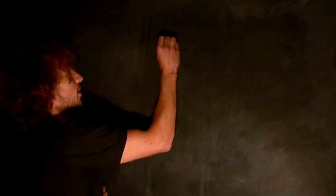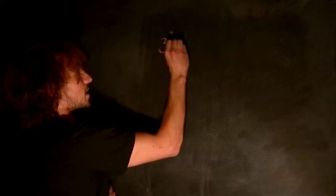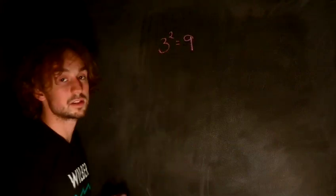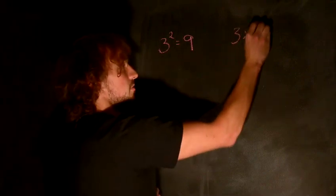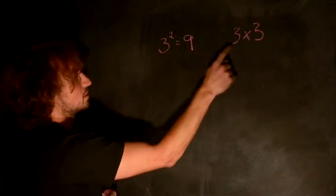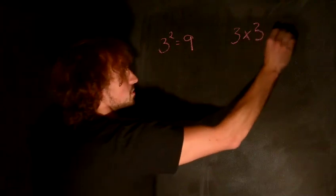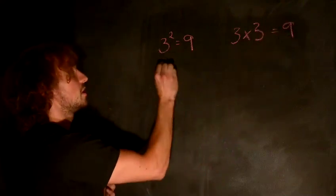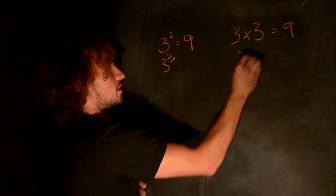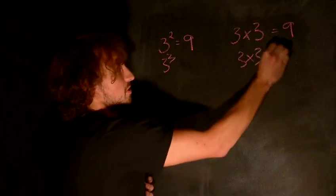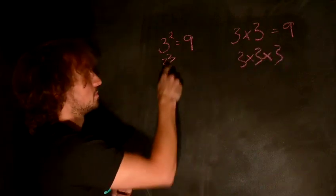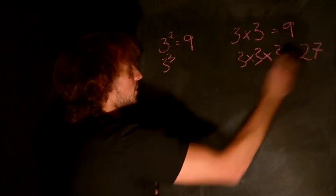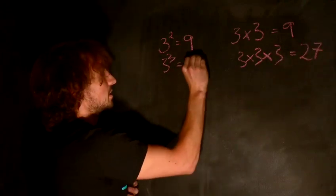So first of all we know that 3 squared is equal to 9. This means 3 times 3. 3 squared means you write 3 two times and it's equal to 9. So 3 cubed is 3 times 3 times 3. So you've written a 3 three times and that's equal to 27.